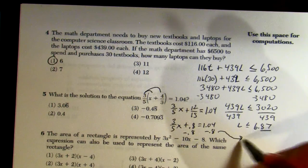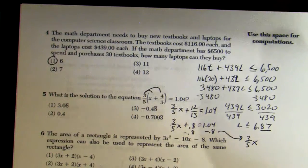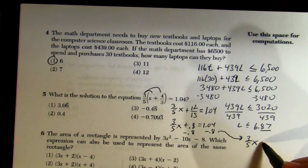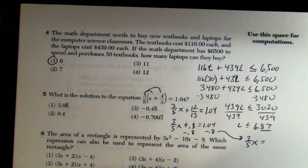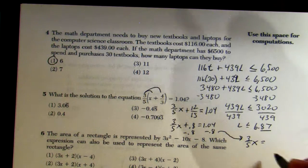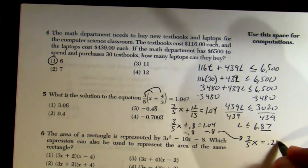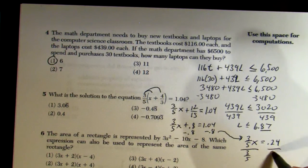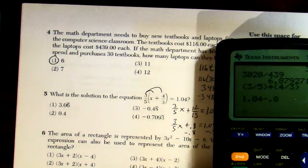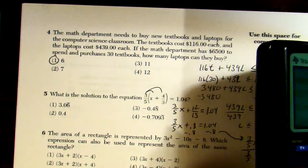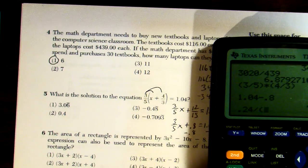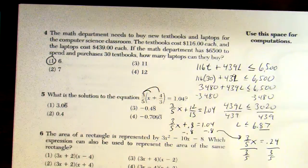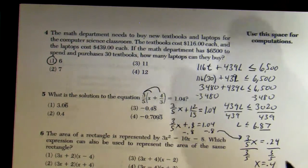Subtract 0.8 from both sides: (3/5)x = 1.04 − 0.8 = 0.24. Now divide by 3/5 — in the calculator, do 0.24 ÷ (3÷5) and hit enter. You get 0.4. That is choice 2.